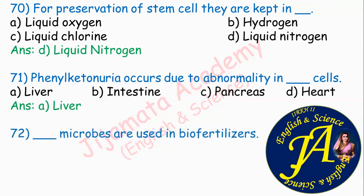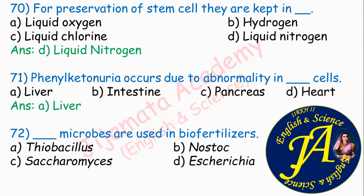Dash microbes are used in biofertilizers. Options are Thiobacillus, Nostoc, Saccharomyces, Escherichia. Correct answer is option B: Nostoc. Nostoc, Anabaena, Rhizobium, Azotobacter — all these are used in biofertilizers. Option B is the correct answer.